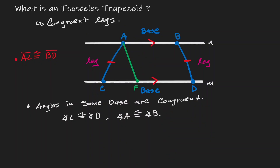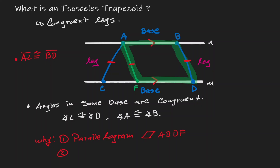Let's give it a point and call it F. By doing so, notice what we have done — we have created a parallelogram. And if this is a parallelogram, remember that opposite sides are congruent to each other. So therefore BD is going to be congruent to AF. We created a parallelogram and by doing so we can apply the property that opposite sides are congruent. Now notice that on the left-hand side we have an isosceles triangle. And what do we know about isosceles triangles? Any angle opposite to congruent sides is congruent. So therefore, angle C is congruent to angle F.